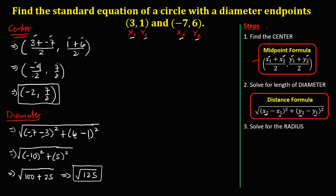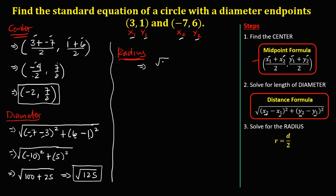Next, solve for the radius. Since the radius is one half of the diameter, we take the diameter — square root of 125 — and divide by 2. So the radius is √125 divided by 2.